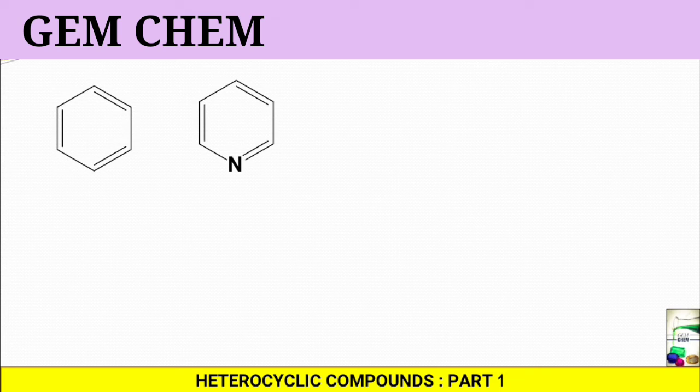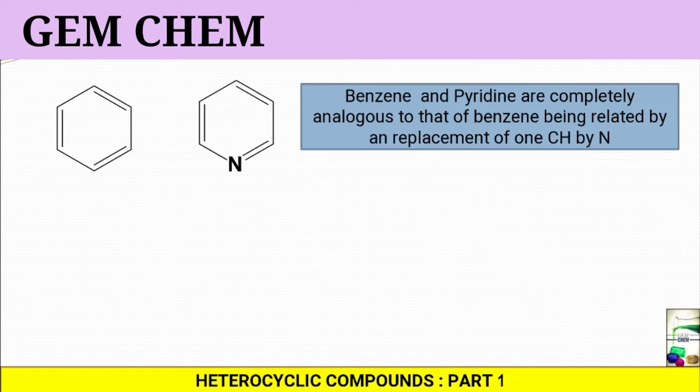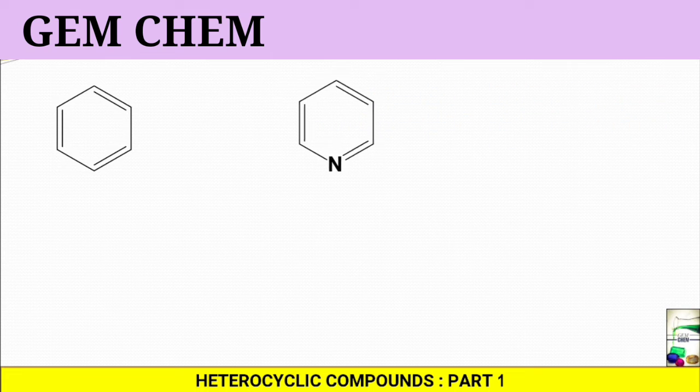We can say that the structure of pyridine is completely analogous to that of benzene and is related by the replacement of CH by nitrogen - this CH is being replaced by nitrogen. Certainly there are some key differences among them.